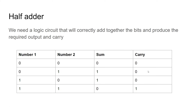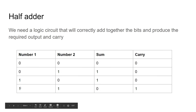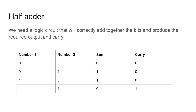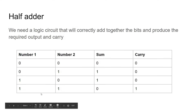Looking at this truth table, you can spot a pattern. A 1 in the sum column only happens if either number 1 or number 2 have a 1 in them, but not both — so that's exclusive or. We need to use an exclusive OR gate for that. And for the carry, we only get a 1 when both number 1 and number 2 are 1, so that needs an AND gate.